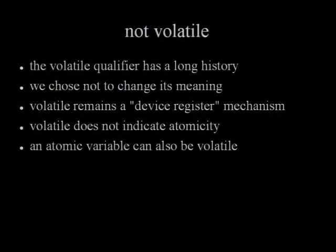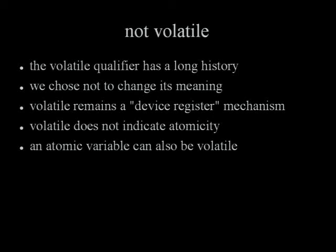We do not use the volatile keyword to indicate atomicity — Java uses volatile, but C and C++ have a longer history and we chose not to change its meaning. It still has the old device-register meaning it's always had and does not indicate atomicity. However, you can have a volatile atomic variable, which says there might be some external agent changing this variable in addition to some other thread. So atomic is a notion between threads, and volatile is a notion to the environment.